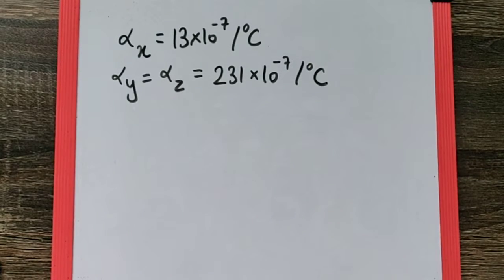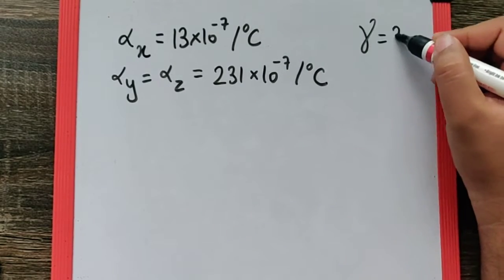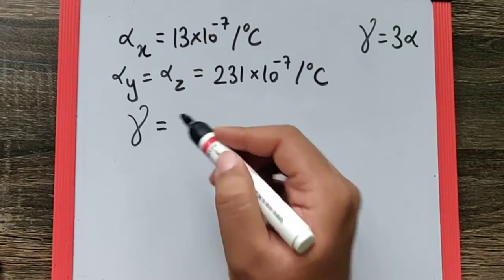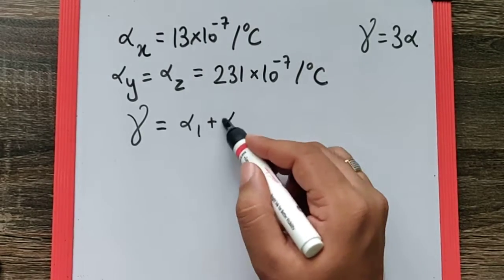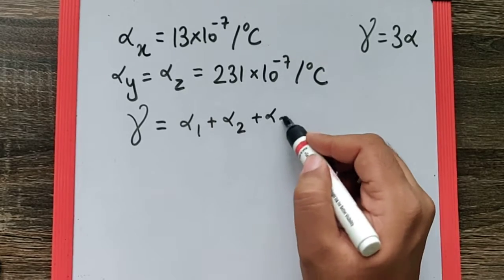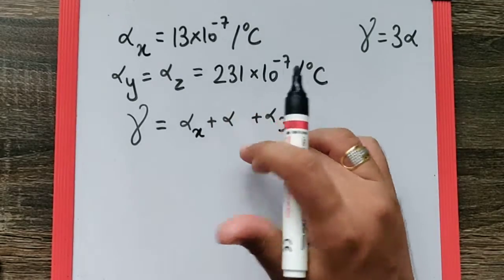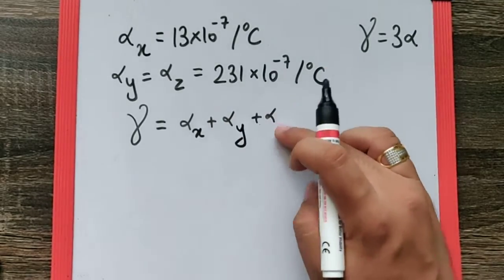Now since we know γ = 3α, it's actually derived from a general formula as α₁ + α₂ + α₃, which is actually α_x + α_y + α_z.